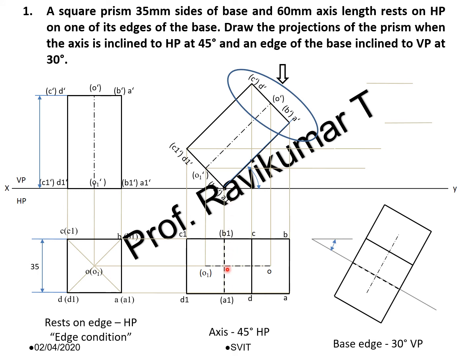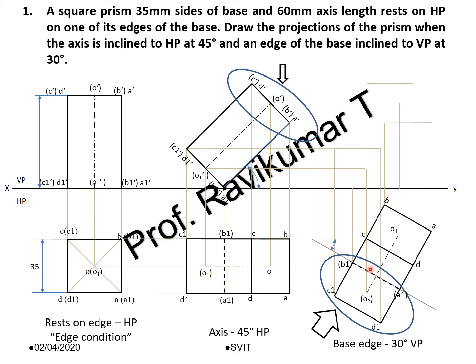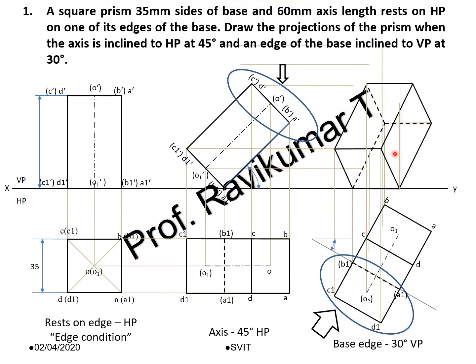What is the third position? As mentioned in the problem, the edge of the base is inclined to VP. Which is the resting edge? B1 and A1 is the resting edge, and this is inclined to VP at 30 degrees. So you can place it on the 30 degree inclination line. This is how you place it, and then you get the naming. You can draw projection lines upward.